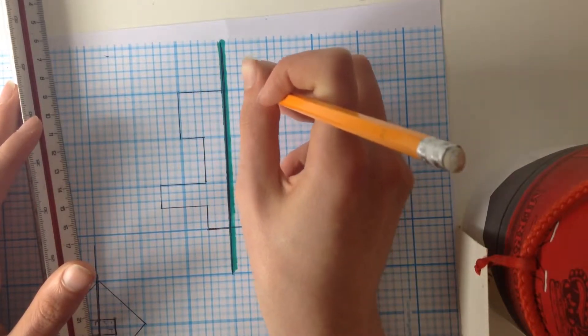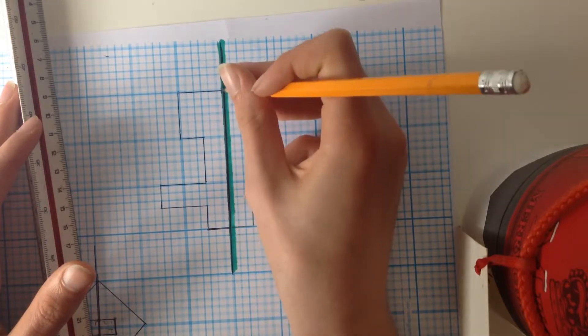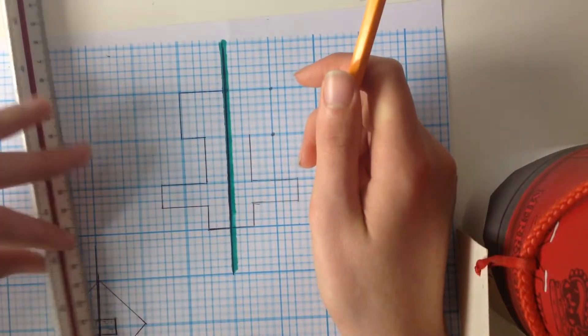Then it goes in for six. One, two, three, four, five, six. Put a dot there. That can also work.